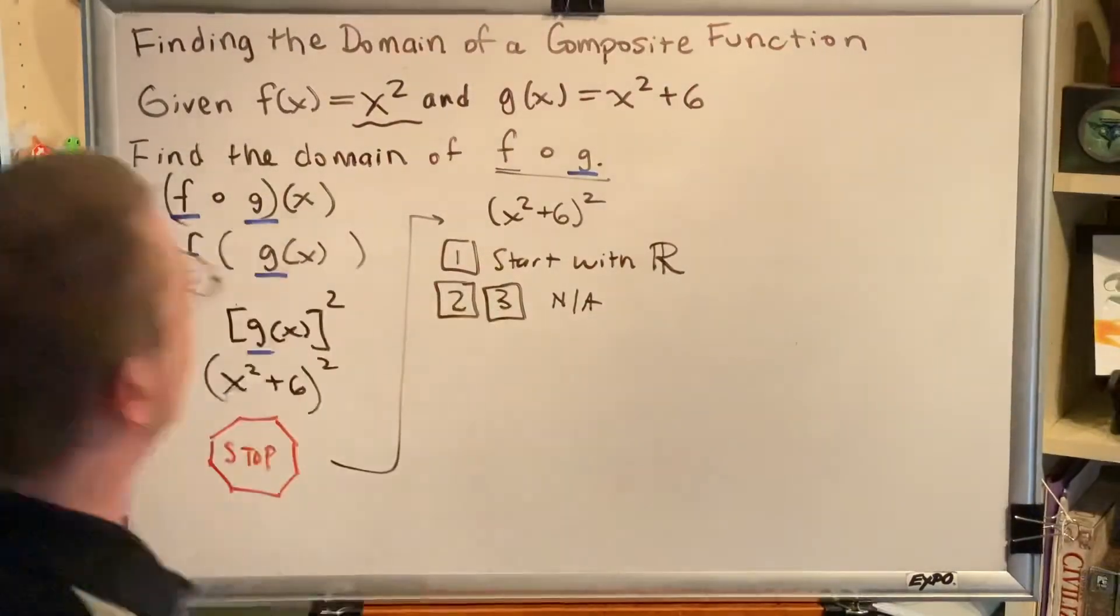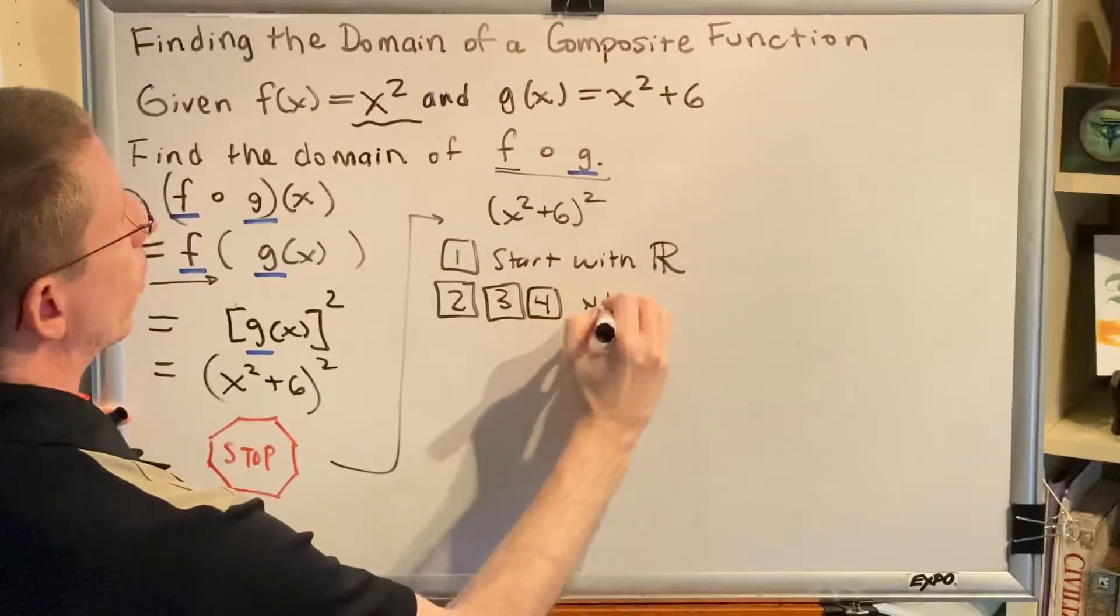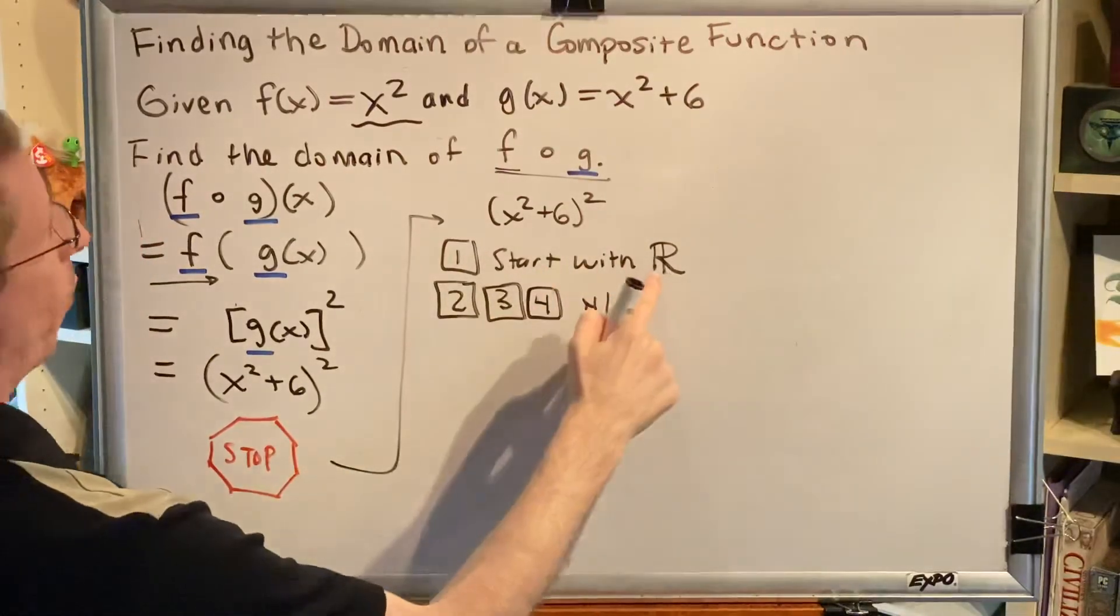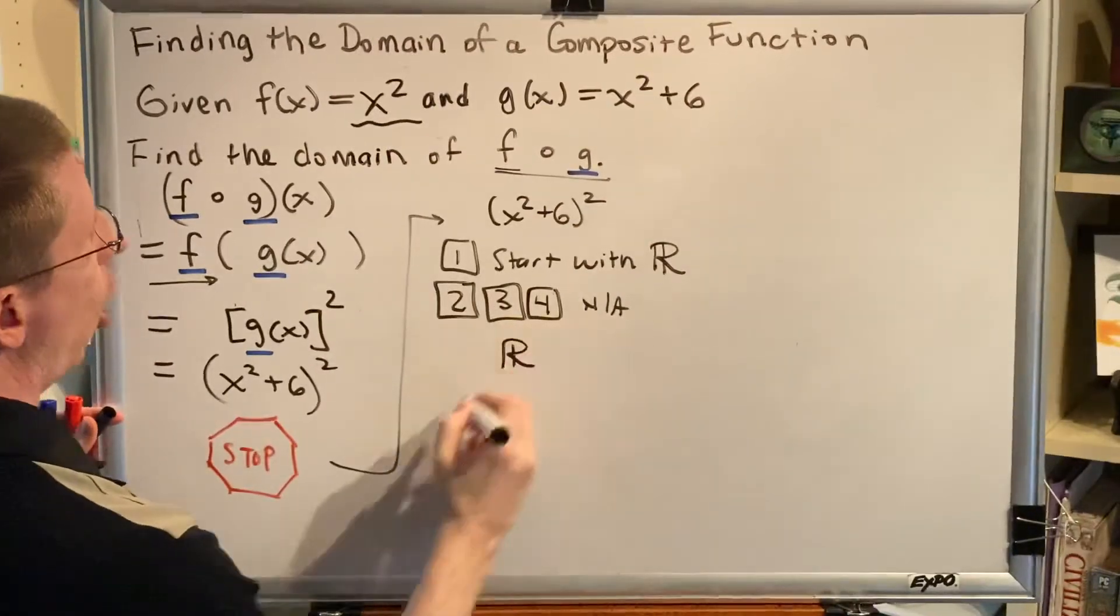Step four, denominators are not equal to zero. We don't have any. So since we started with all real numbers and we didn't remove any numbers, our domain is all real numbers.